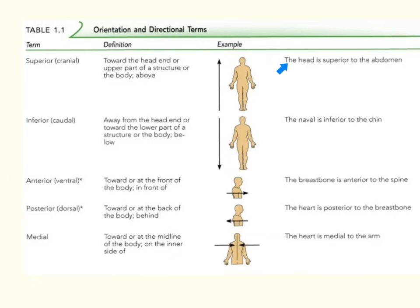Superior means towards the head, so we can see this is the superior area. Inferior means away from the head, so here we would see the inferior area. For example, the head is superior to the abdomen — the head is above the abdomen — while the navel or belly button is inferior to the chin, meaning the belly button is below the chin.